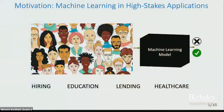The motivation for this research comes from the growing use of machine learning in really high-stakes applications like hiring, education, lending, healthcare, et cetera. For instance, more than 50% of companies are using algorithms at some stages in their hiring pipeline. Similarly, algorithms are widely used in lending and for credit decision-making.